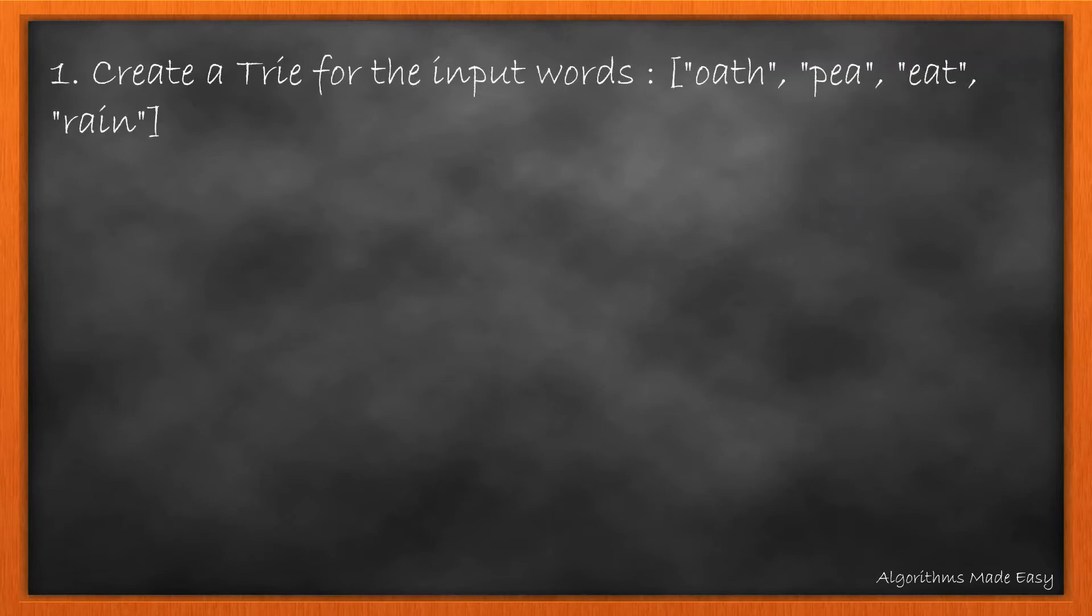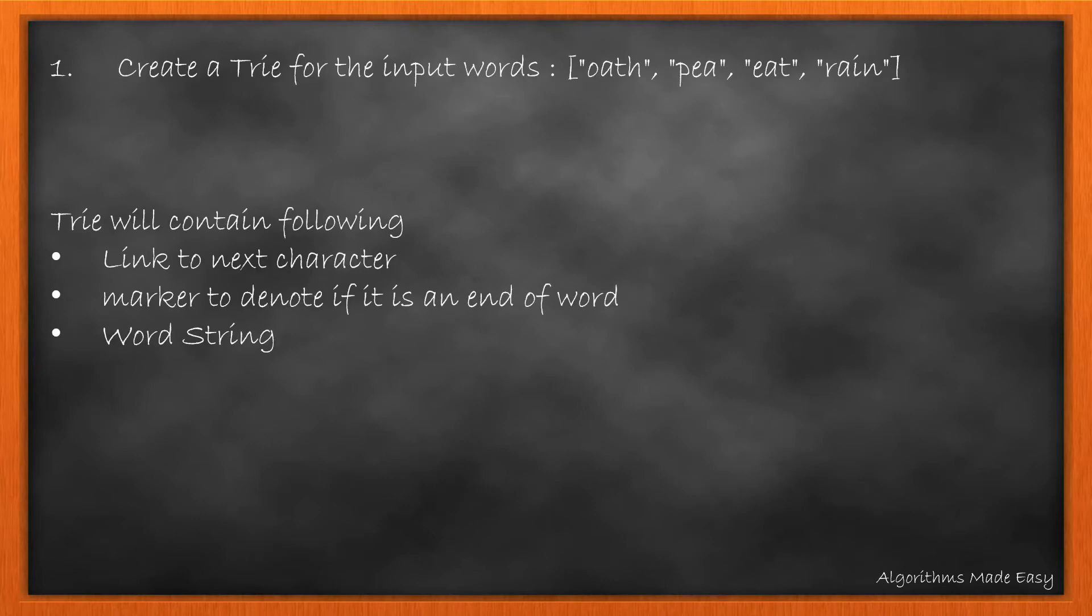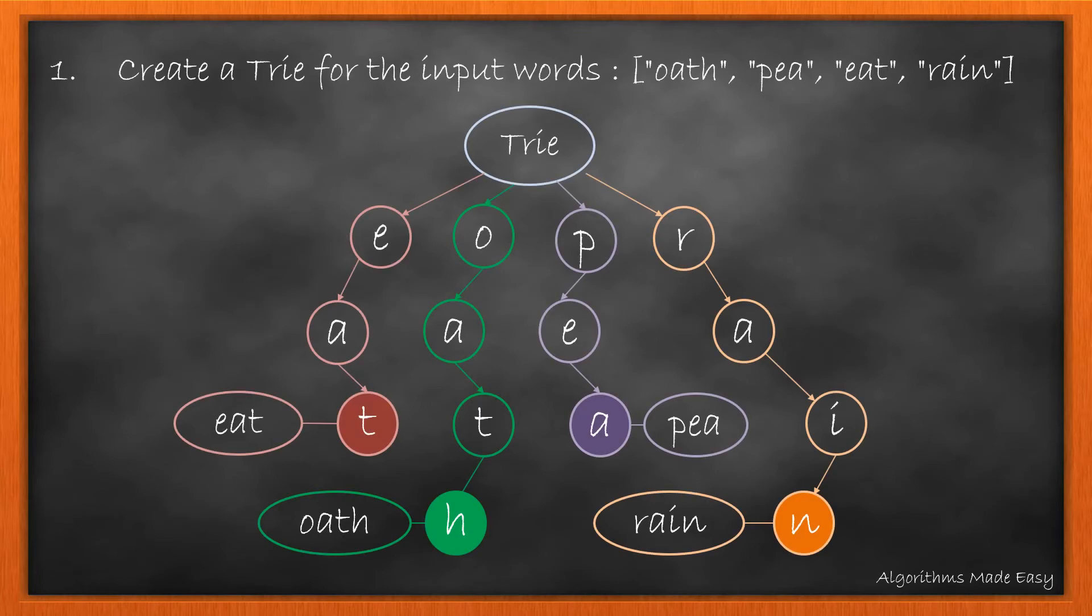The first step to solve this problem would be creating the Trie for the given words. The Trie here would contain three values: the link to the child character, the marker to denote if it is the end of word, and the word itself. Here is the final Trie for the given input.